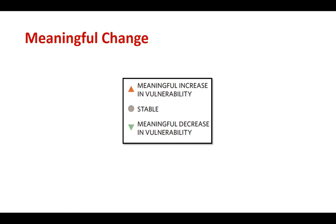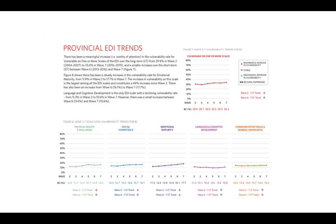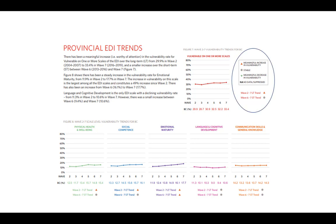Page 32 of the profiles provides some more detail about the concept of meaningful change. On page 19, the provincial EDI trends over time — this graph shows the trend line for the summary measure 'vulnerable on one or more scales' of the EDI. You can see the near continuous increase of vulnerability over time for this scale. The long-term trend shows a meaningful increase in vulnerability for the province, climbing from 29% in Wave 2. While the short-term trend is stable, there was an increase in vulnerability from 32.2% in Wave 6 to 33.4% in Wave 7. Going back to the idea of 10% being a reasonable benchmark, the Wave 7 rate of 33.4% is three times higher than we would consider acceptable.